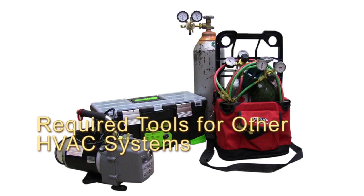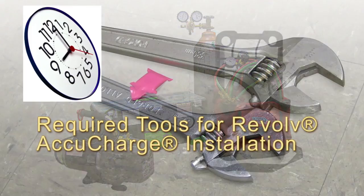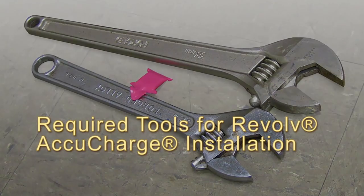SweatFit systems require torches, vacuum pumps, gauges, nitrogen tanks, and several additional hours on the job site. The AccuCharge system requires only two wrenches and minimal time on the job site.